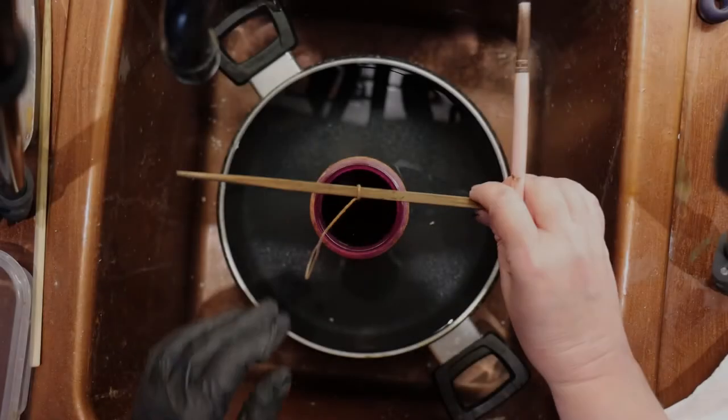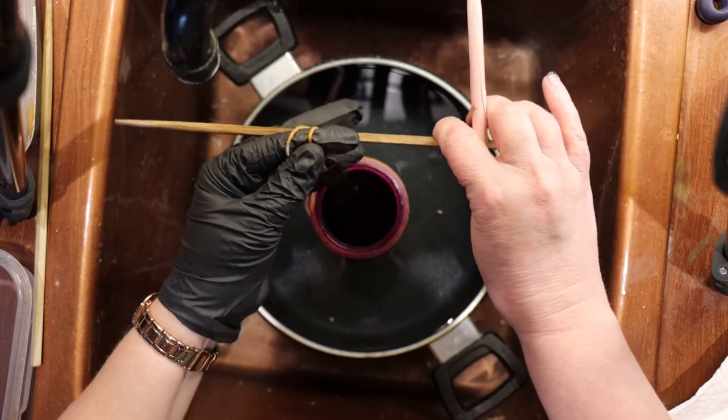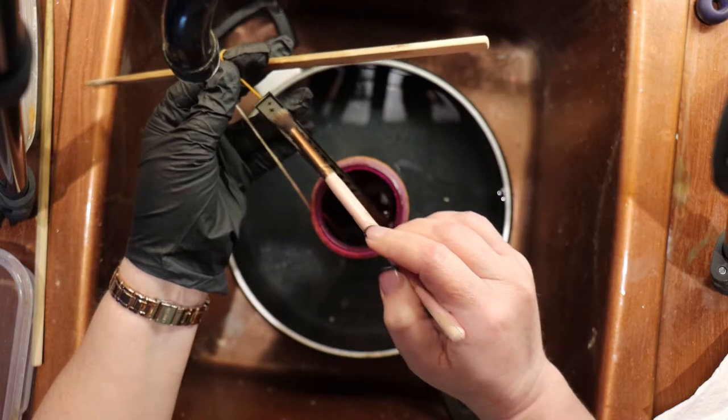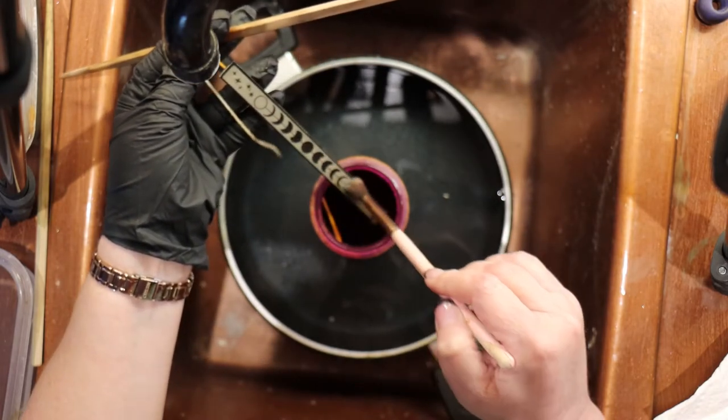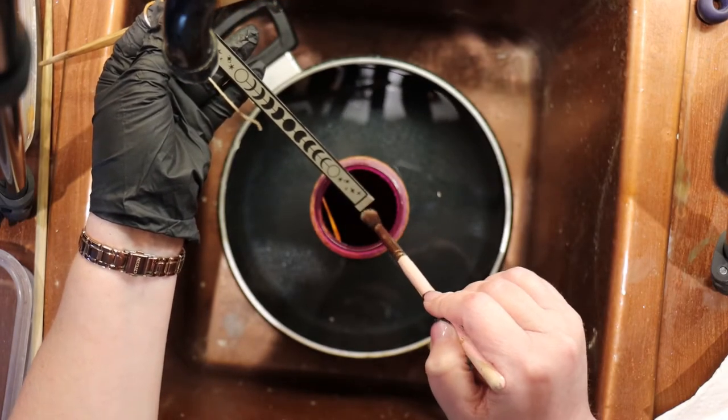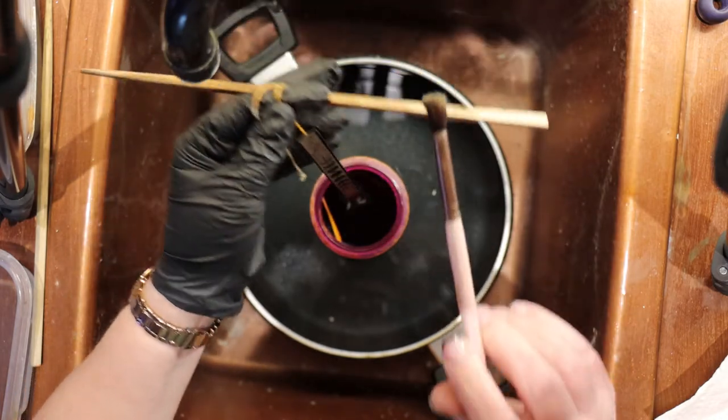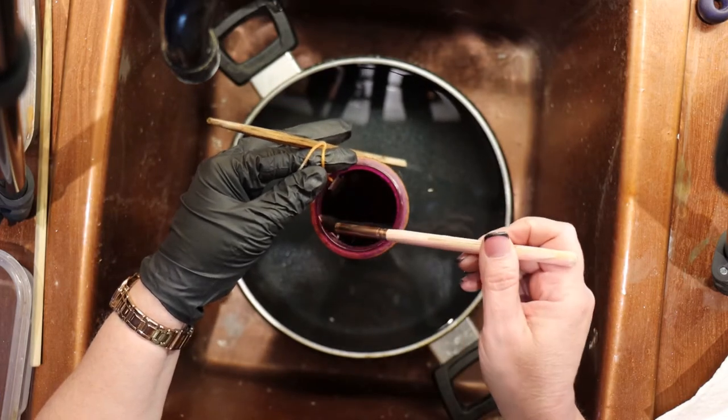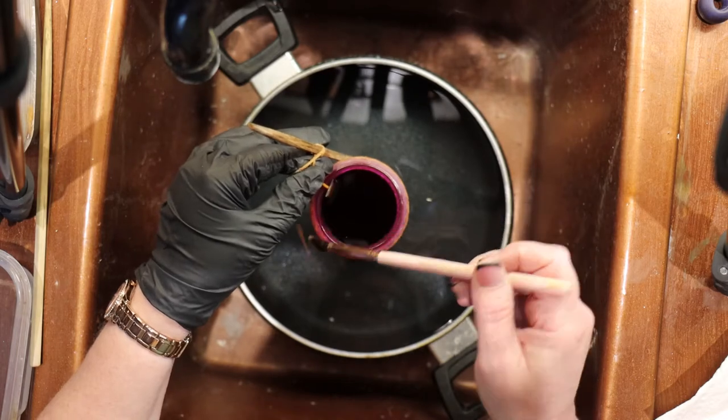So we are now 40 minutes into the etching, and I only etched my pieces for an hour. So we're going to check the piece again, and this is when you will start to notice a considerable difference. So far, our toner resist is holding up quite nicely, and I'm not seeing any of the toner coming off of the piece, which is what we want to see. And again, I'll heat the water back up.